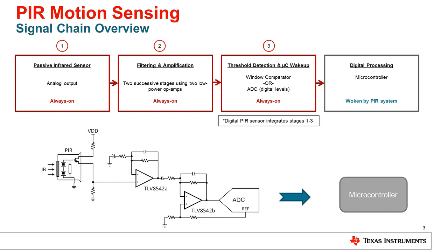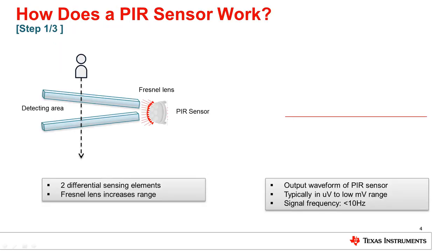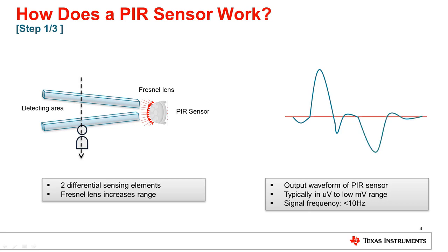Digital PIR solutions integrate steps one through three, leaving you with no flexibility to select the proper components to minimize power. We'll continue to analyze the differences between analog and digital PIR solutions as we step through the signal chain, starting first with the PIR sensor itself. A PIR sensor is composed of two sensing elements that measure the difference in IR energy in the field of view of the sensor. The potential difference between the two elements is seen across the output of the sensor. Here you can see an example of how the waveform tracks the movement of a human body. As the body passes through each sensing element, an S-shaped waveform is created on the output. PIR output frequency is very low at only 10 Hz and is also very small in amplitude, meaning we'll need to amplify the signal to extract meaningful results from it.